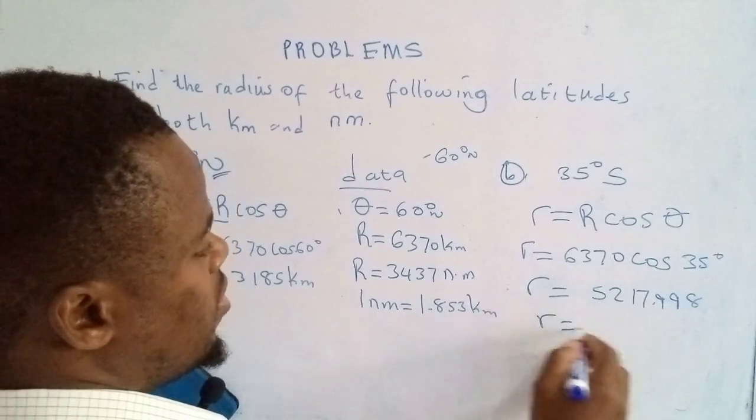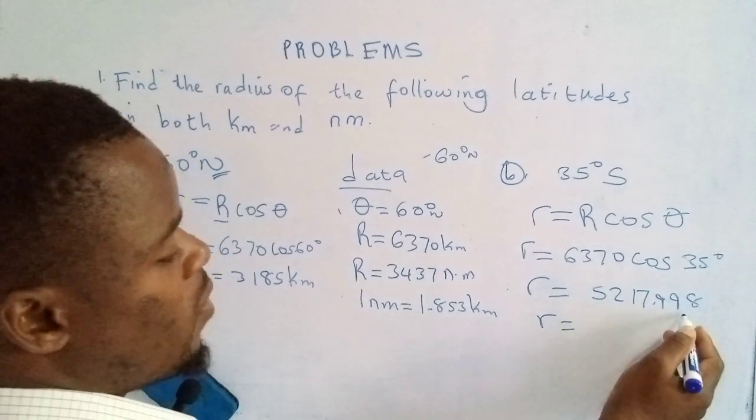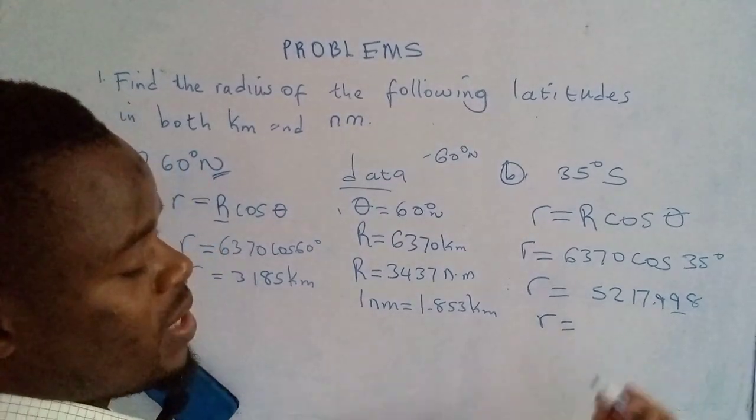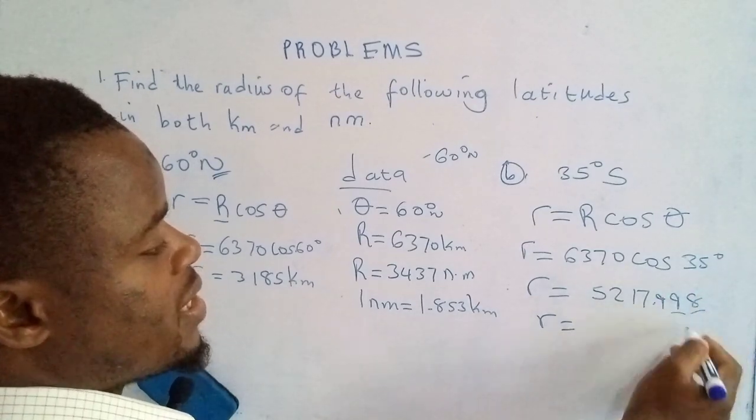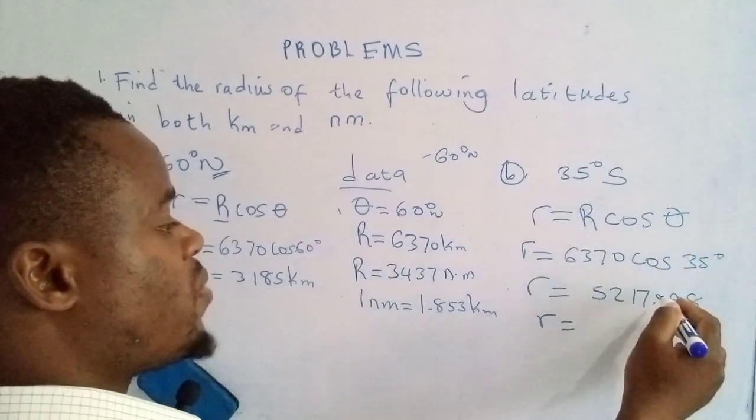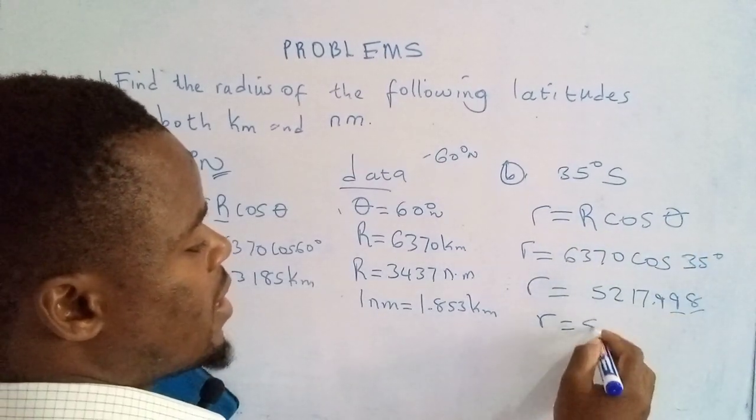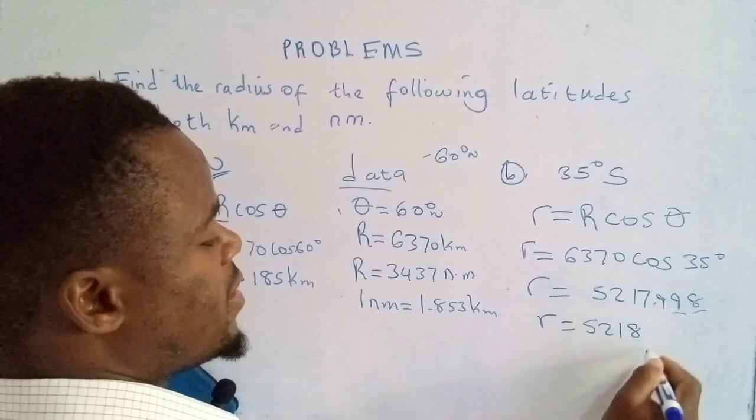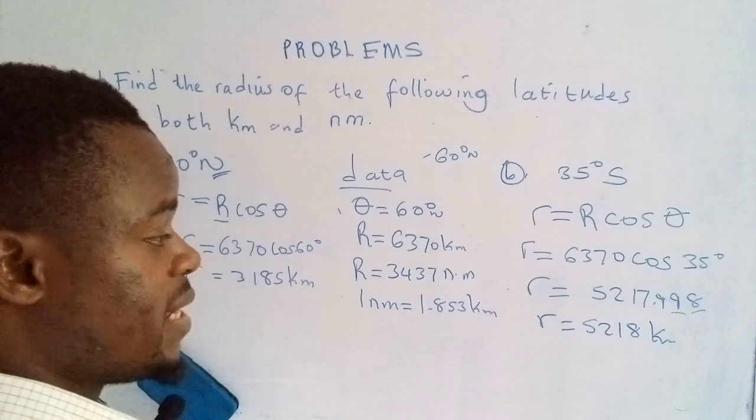If we were to round off this one, my focus is rounding off to two decimal places. We increase by 1 since this one is greater than 5. This one will become a 10, we'll get a 1, we'll add it to this one, 10 again. So this one will become 8. That's 5218 kilometers.